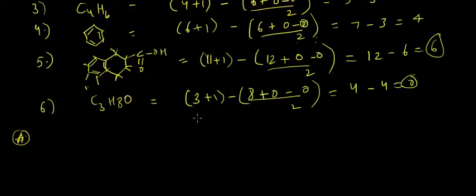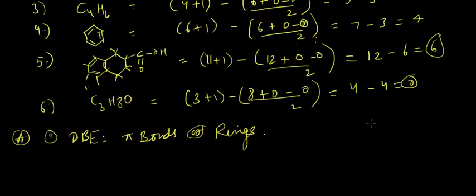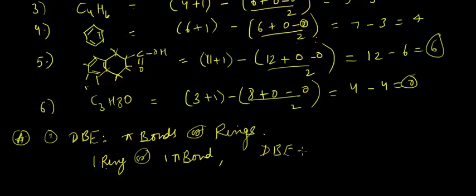So how is DBE calculated? If you look into this shortcut trick, the DBE of a compound is determined by how many pi bonds or rings are there in that compound. Let's suppose a compound has one ring or one pi bond, then the DBE of that compound would be one.